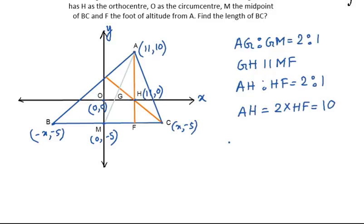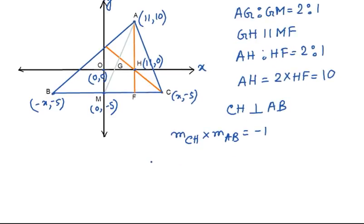We can see from the figure that CH is an altitude of the triangle. So CH must be perpendicular to AB. So definitely slope of CH times slope of AB, the product of the slopes is definitely going to be minus 1.